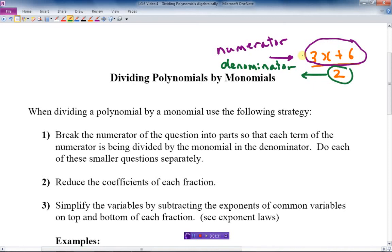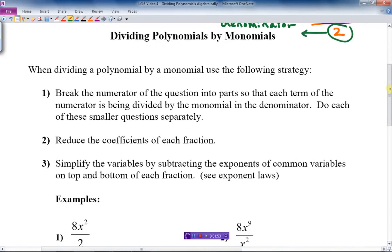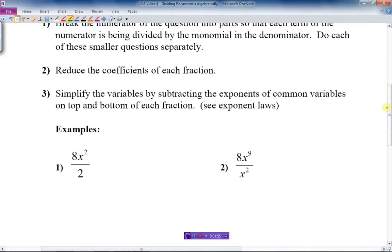Number two: reduce the coefficients of each fraction, so we take care of the coefficients first. And thirdly, we simplify the variables by subtracting the exponents of common variables on top and bottom of each fraction. In other words, we use the exponent laws to take care of the variables. Well, that might sound a bit confusing, so let's do some examples and work through those steps.